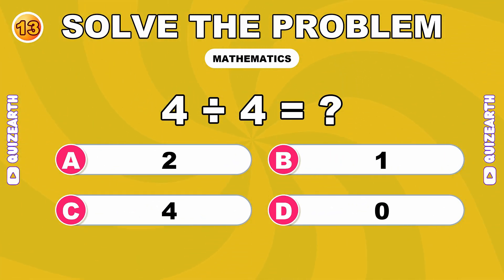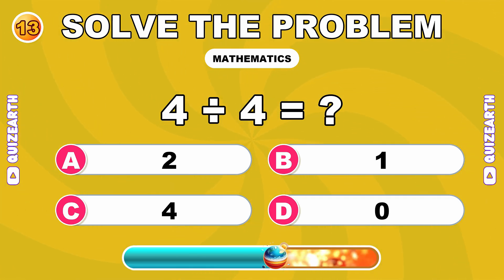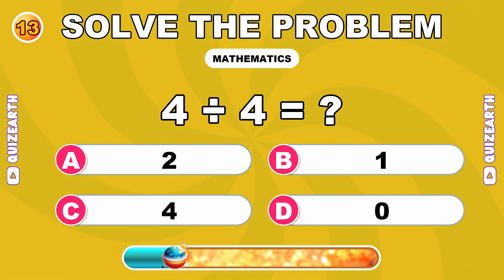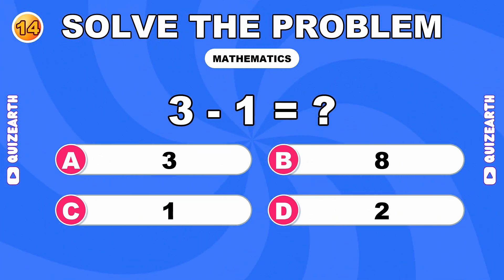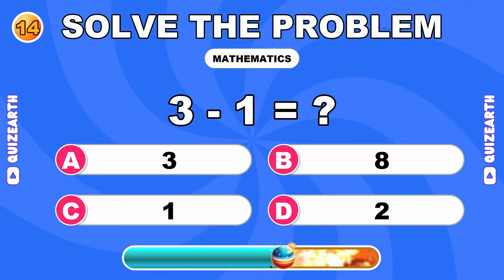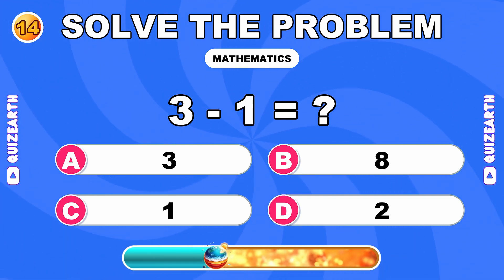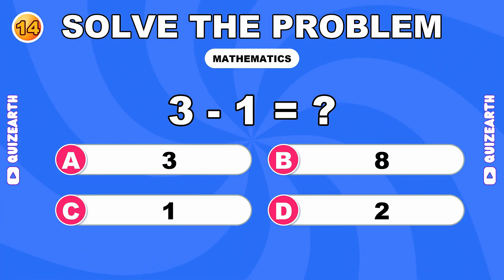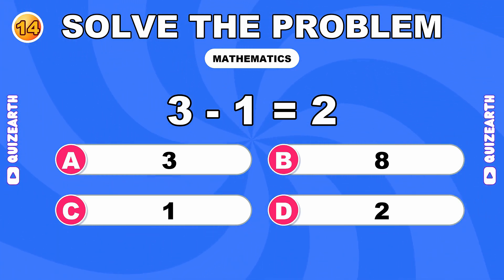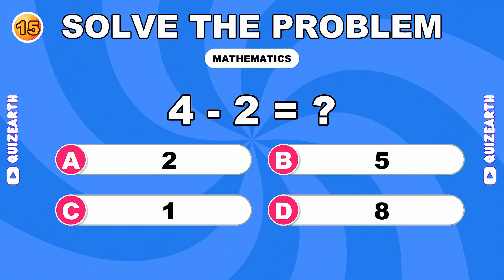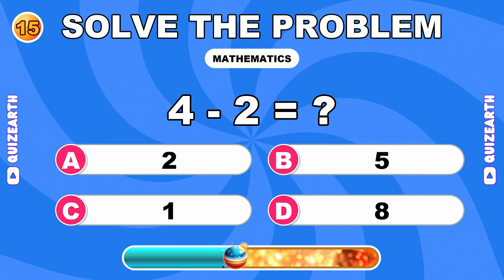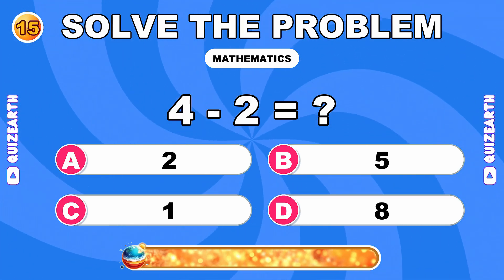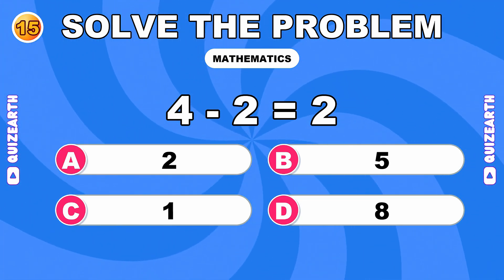What is 4 divided by 4? Beast mode activated. The answer is 1. How much is 3 minus 1? Nailing it. The answer is 2. What do you get when you subtract 2 from 4? So smooth. The answer is 2.